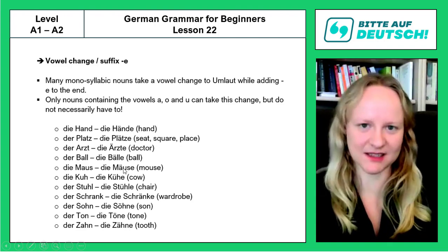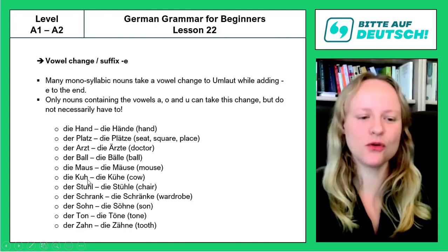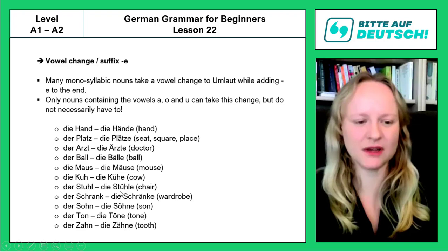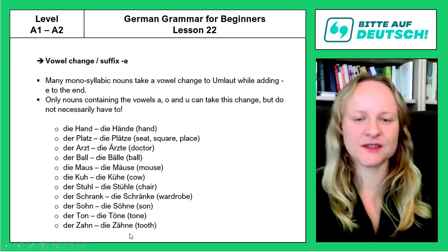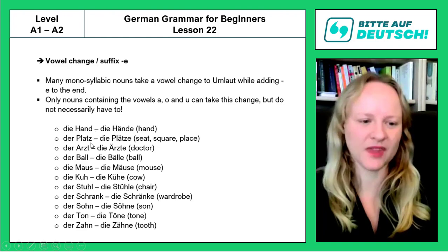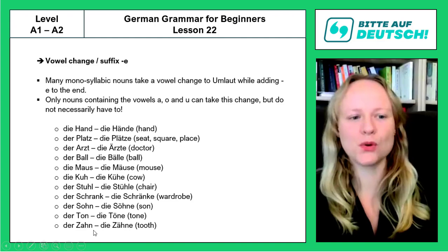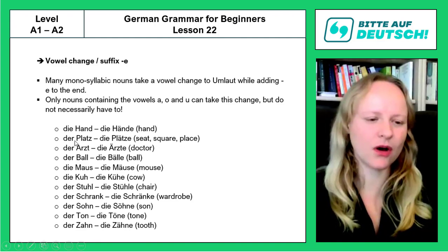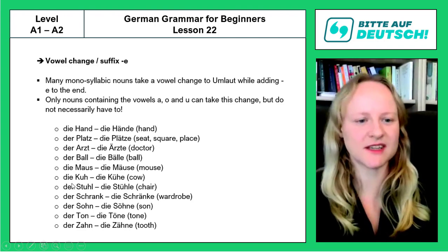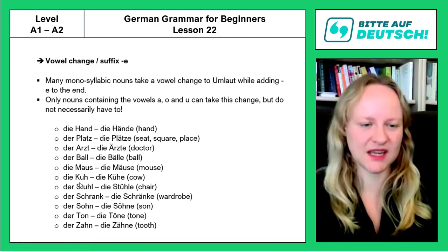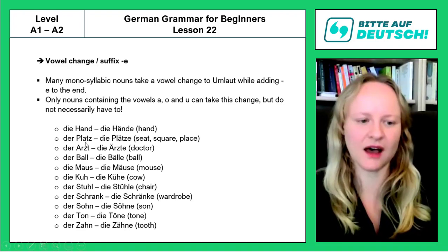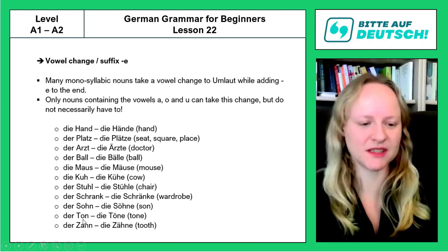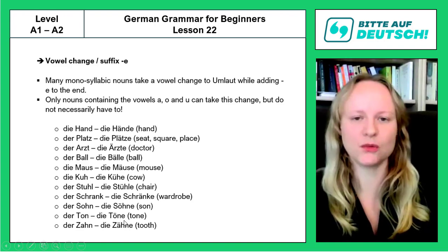Let's look at examples with umlaut change: die Maus → die Mäuse; die Kuh → die Kühe; der Stuhl → die Stühle; der Schrank → die Schränke; der Sohn → die Söhne; der Ton → die Töne; und der Zahn → die Zähne. All of these — Hand, Platz, Arzt, Ball, Maus, Kuh, etc. — are monosyllabic words. They are often masculine, sometimes neuter, sometimes feminine, so the gender alone doesn't tell us what to do. But since all of them contain a vowel with an equivalent in umlaut — A, U, O — those vowels do change to umlaut in the plural form before we add -e.